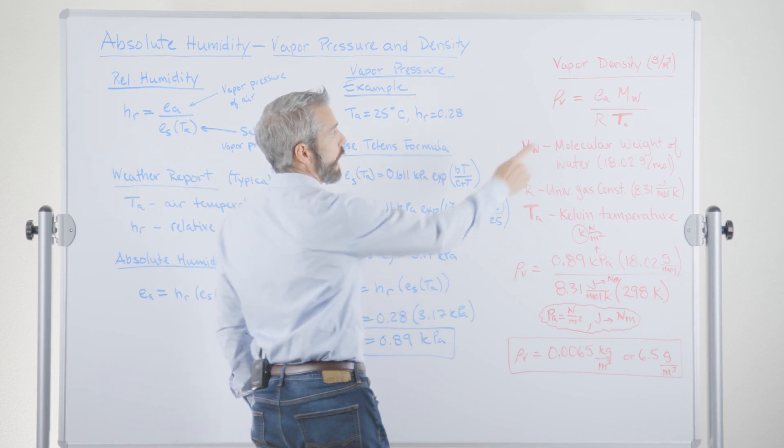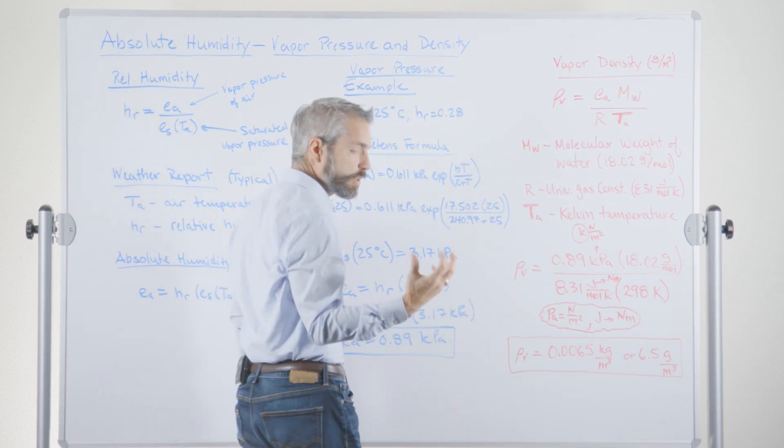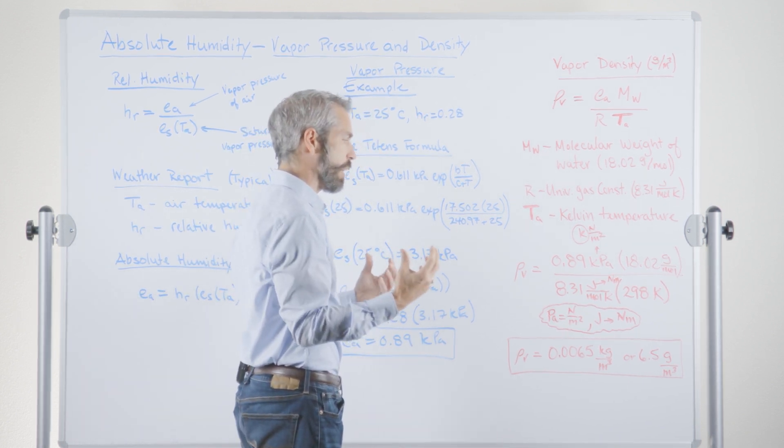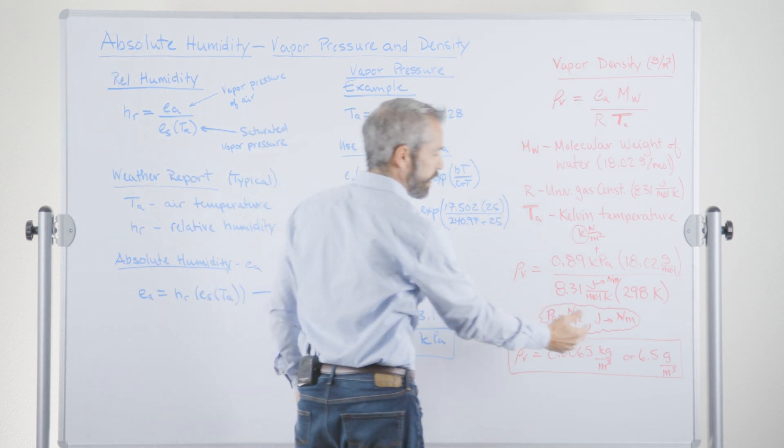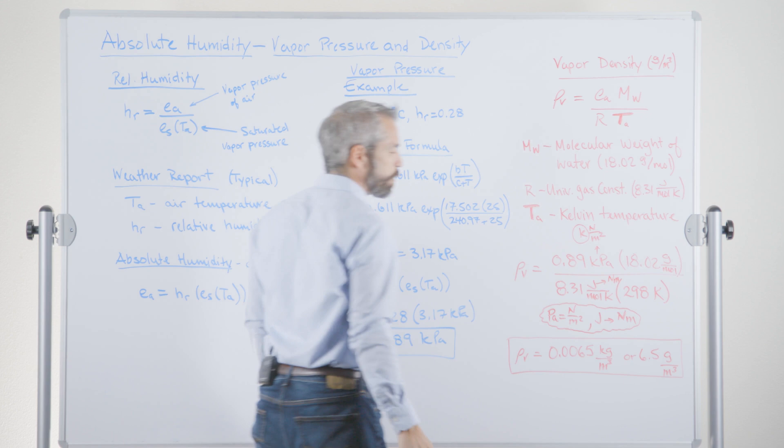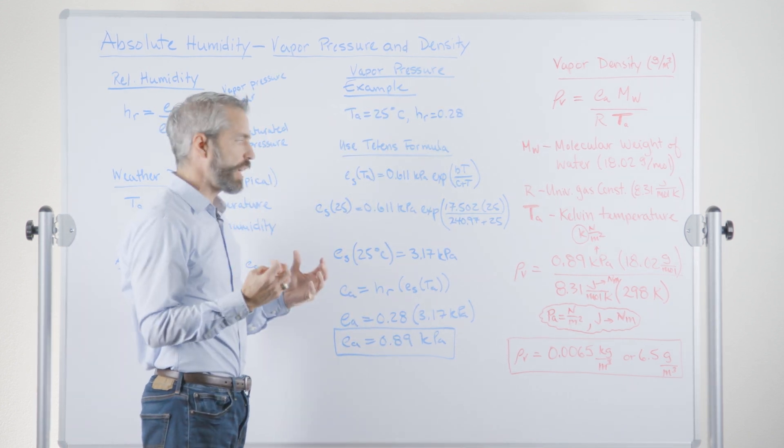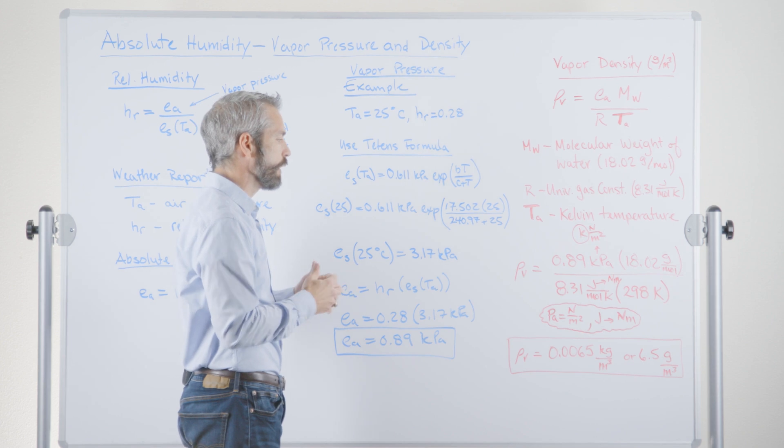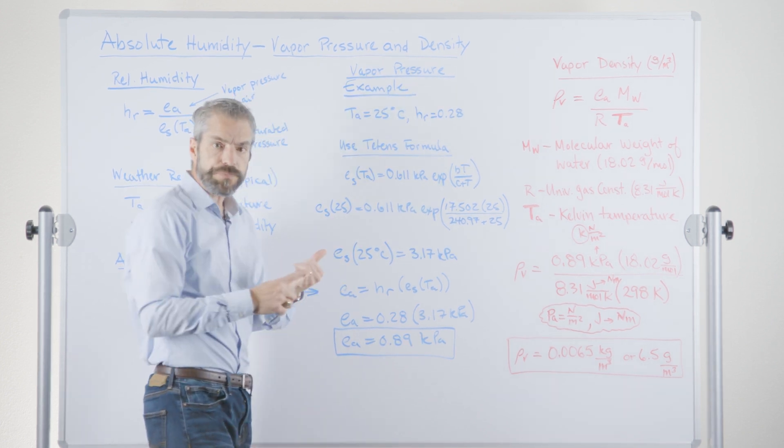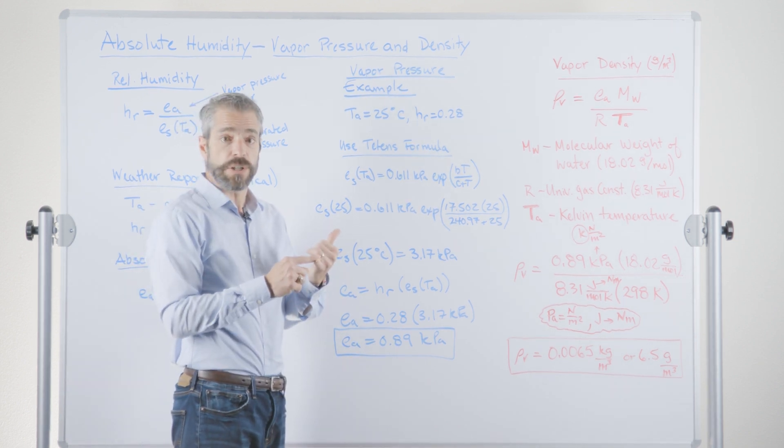But since we actually wanted to do this in grams, because that's more typical of what you find in how much water there is in air is not in a kilogram of water, but more in terms of grams of water, we get 6.5 grams per meter cubed.